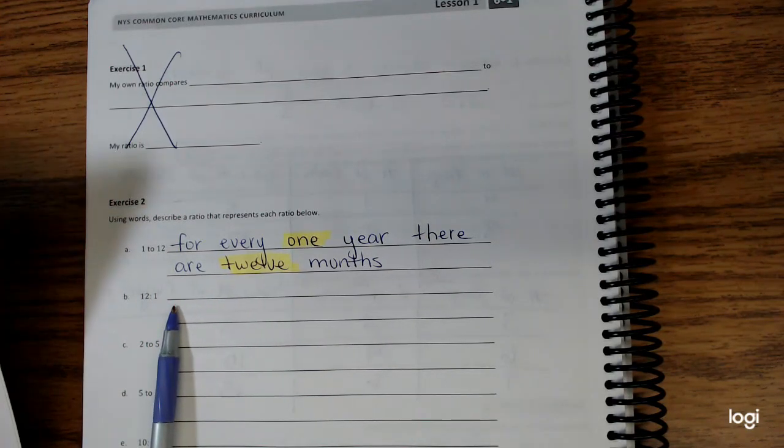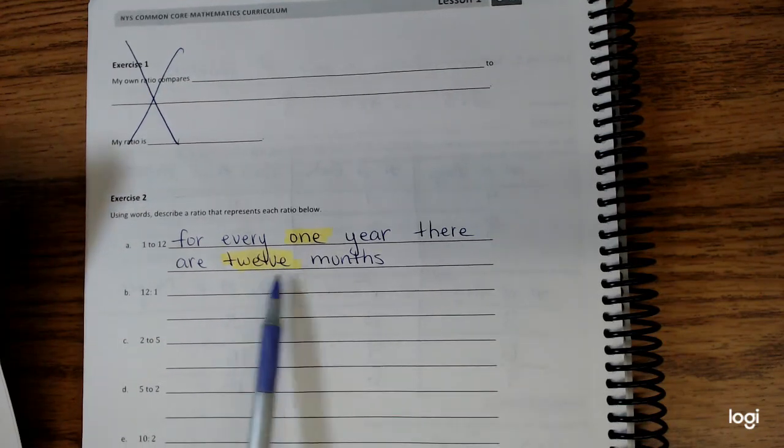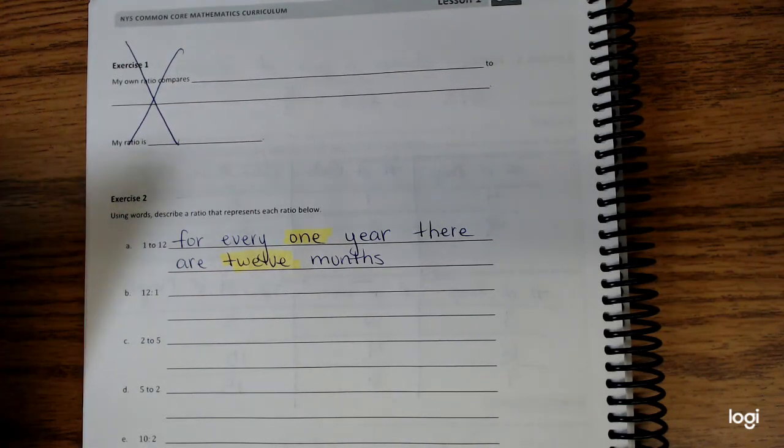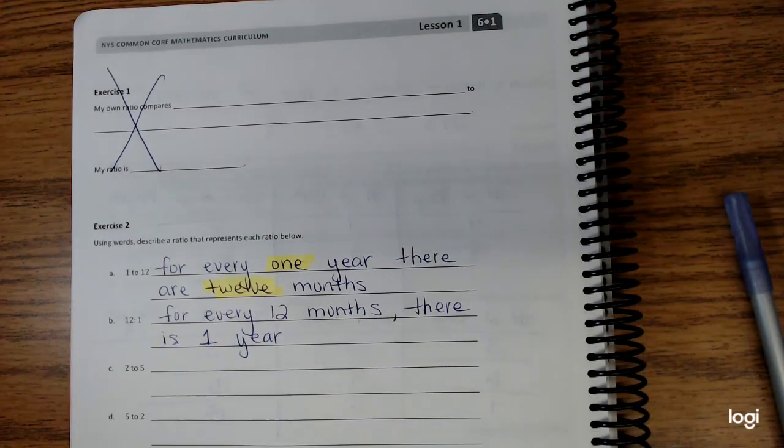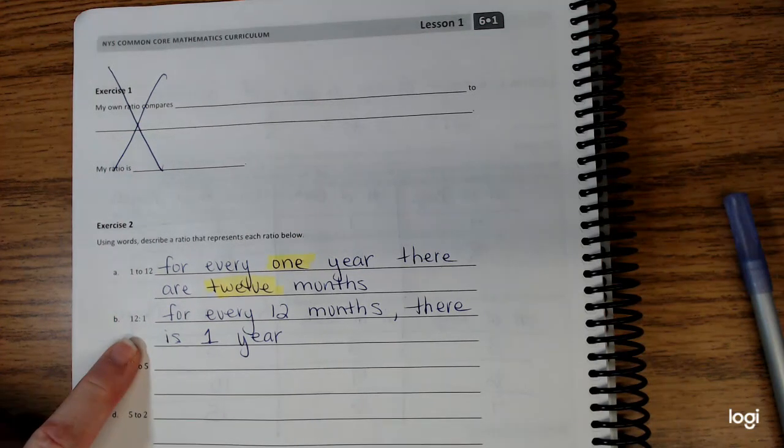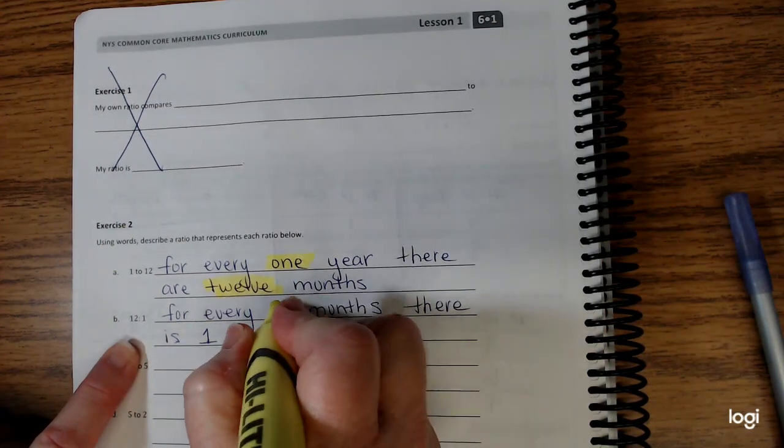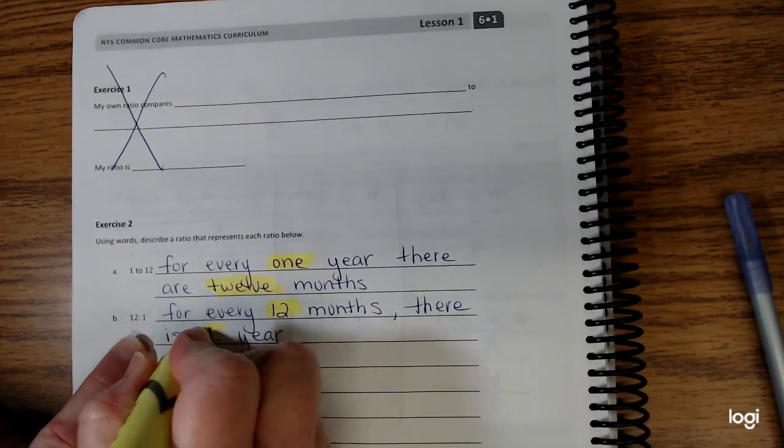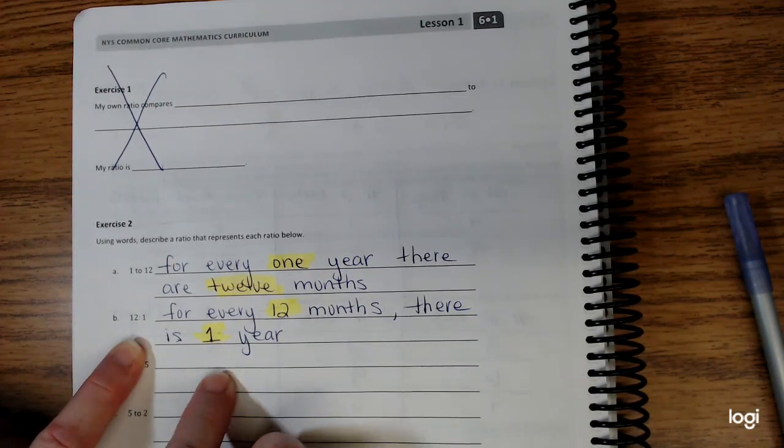If I'm going to do it, I want to keep the same scenario. I could change it around. The ratio is 12 to 1. Twelve was listed first, so my situation could be for every twelve months, there is one year.